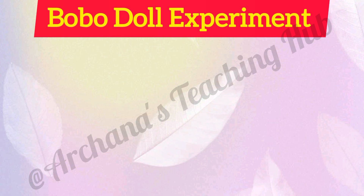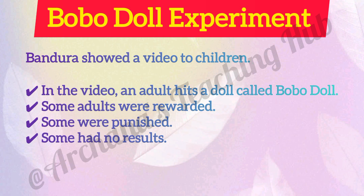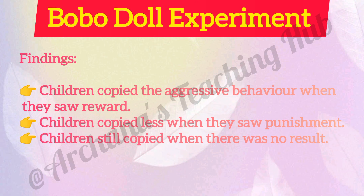Now, the Bobo Doll experiment. Bandura showed a video to children. In the video, an adult hits a doll called the Bobo Doll. Some adults were rewarded, some were punished, and some had no results. Experiment findings: children copied the aggressive behavior when they saw reward. Children copied less when they saw punishment. Children still copied when there was no result.